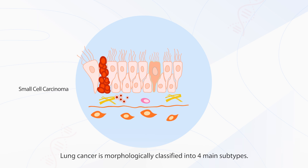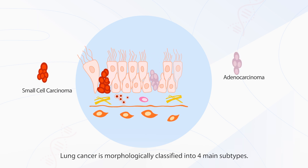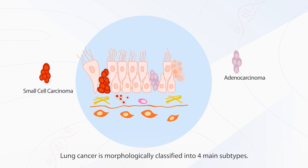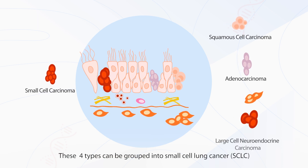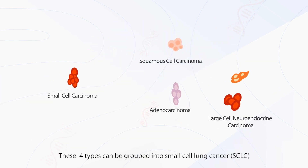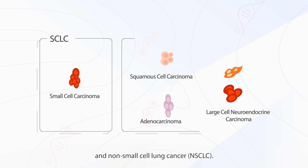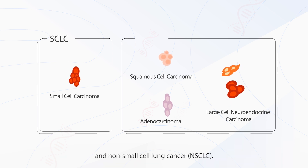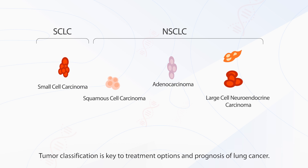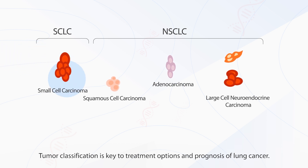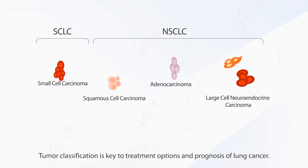Lung cancer is morphologically classified into four main subtypes. These four types can be grouped into small cell lung cancer, SCLC, and non-small cell lung cancer, NSCLC. Tumor classification is key to treatment options and prognosis of lung cancer.